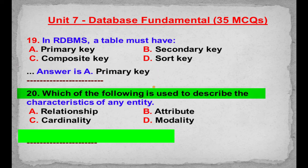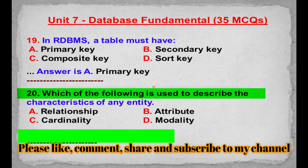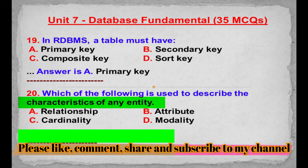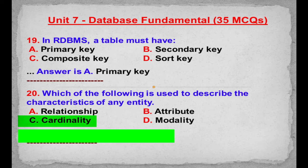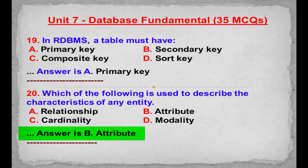MCQ number 20: Which of the following is used to describe the characteristics of any entity? Option A: Relationship. Option B: Attribute. Option C: Cardinality. Option D: Modality. Correct answer is Option B: Attribute.